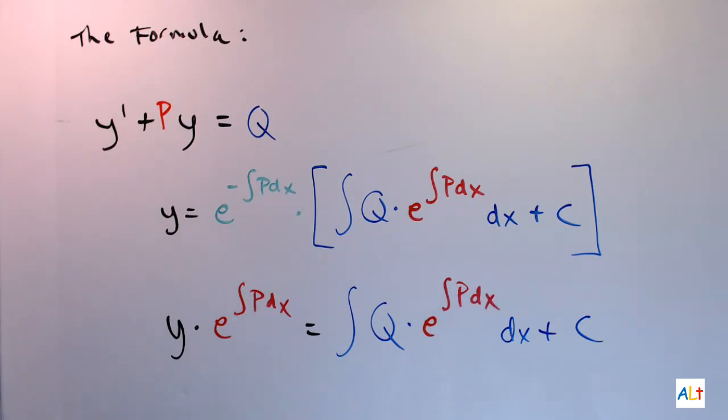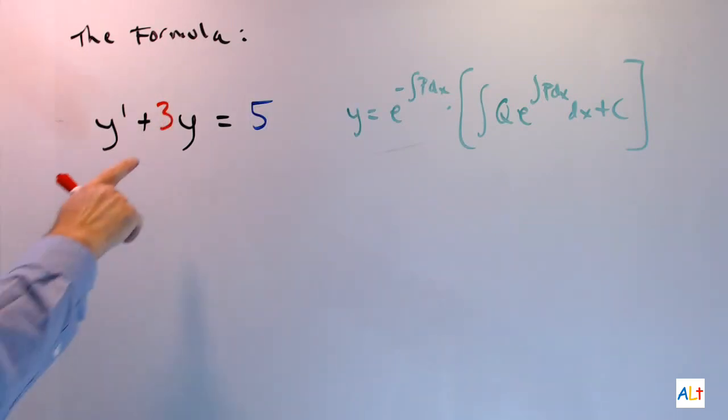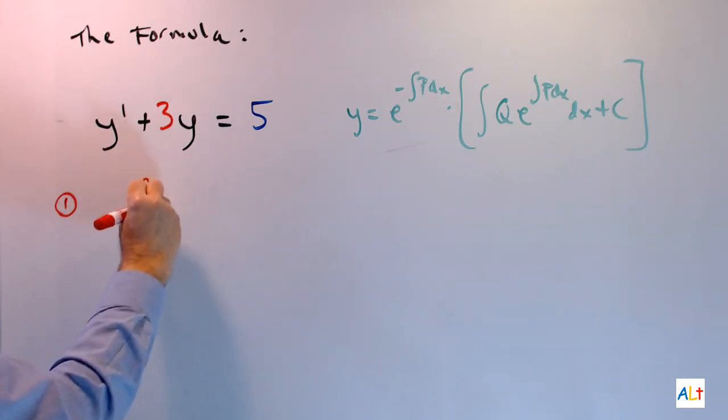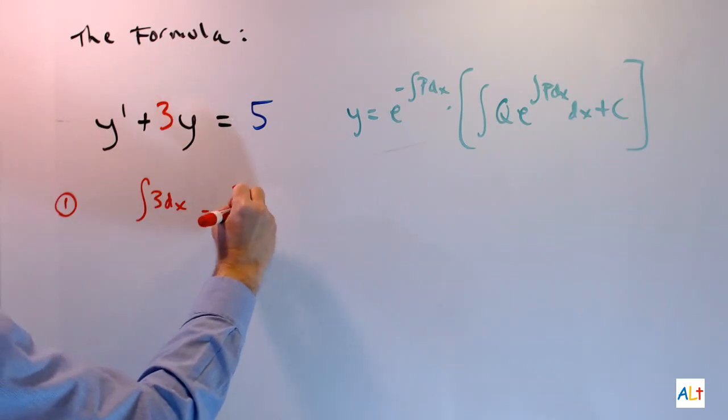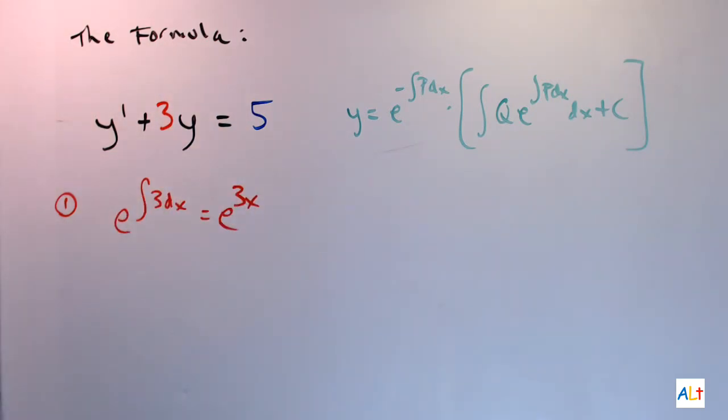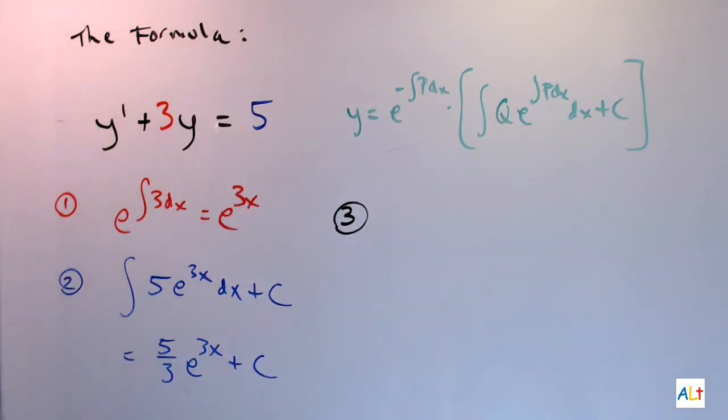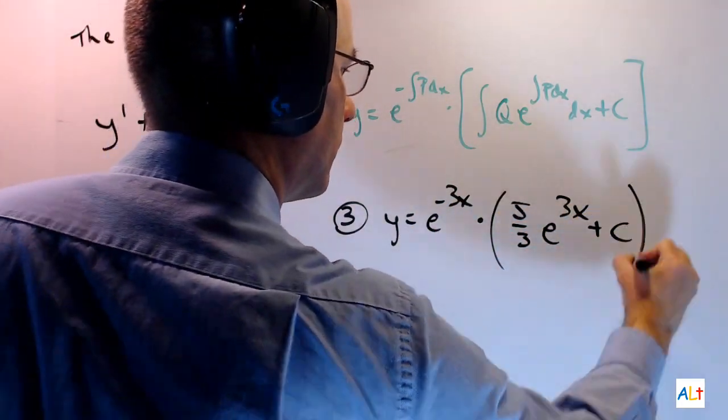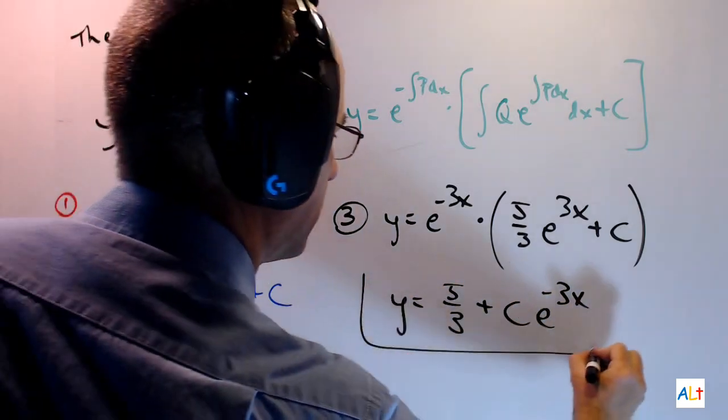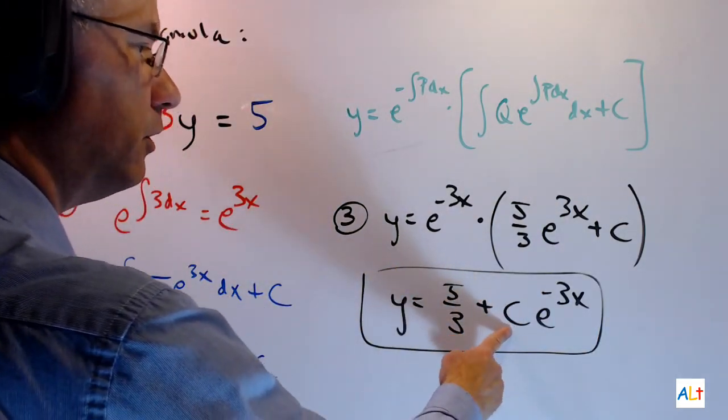So let's do an example. So we have p equals 3, q equals 5. First step, find the integrating factor. There it is. Next step, solve the blue integral. Last step, put the integral into there and finish it off. And there is your solution. You can see that this integration constant is important, so don't forget it.